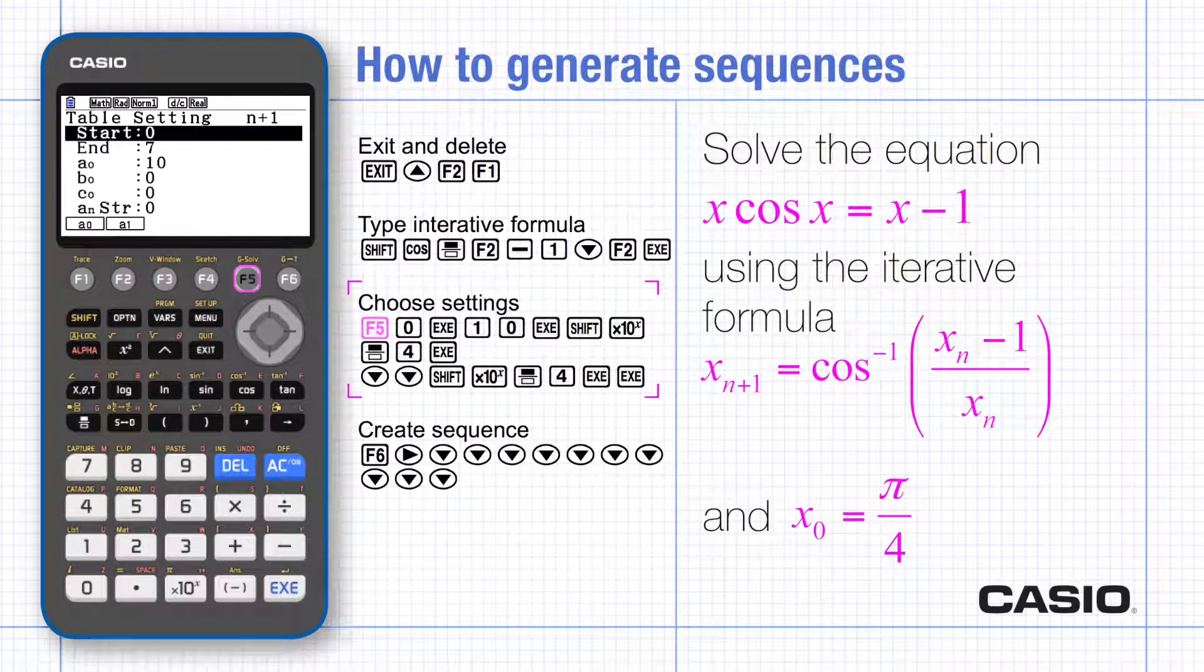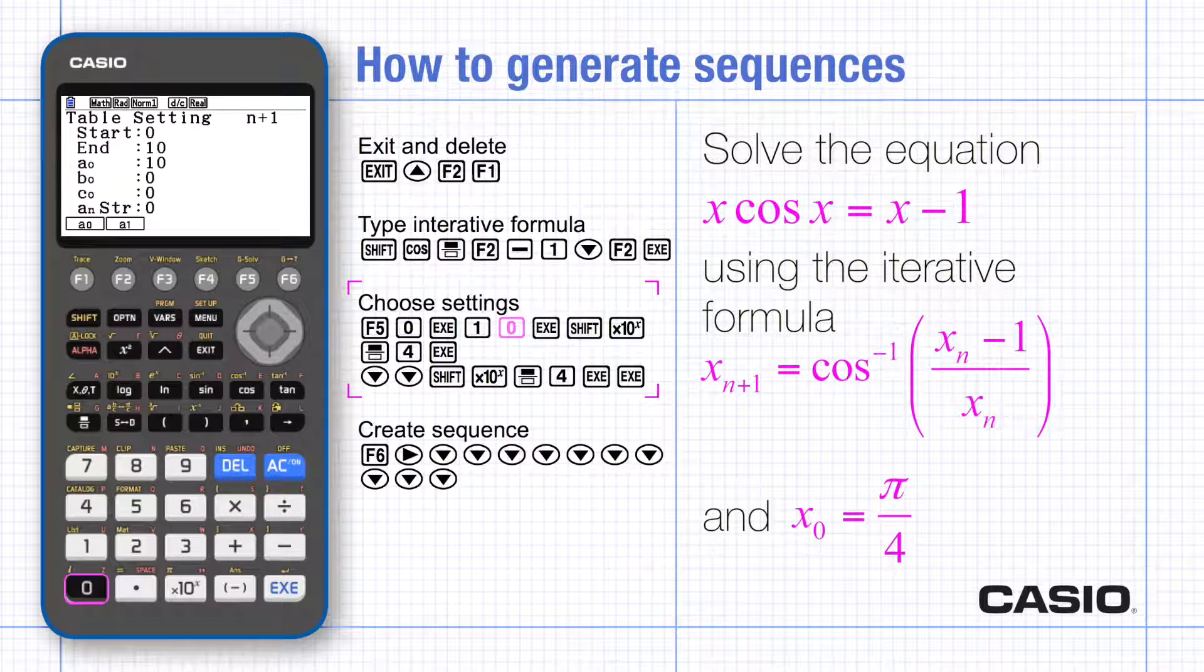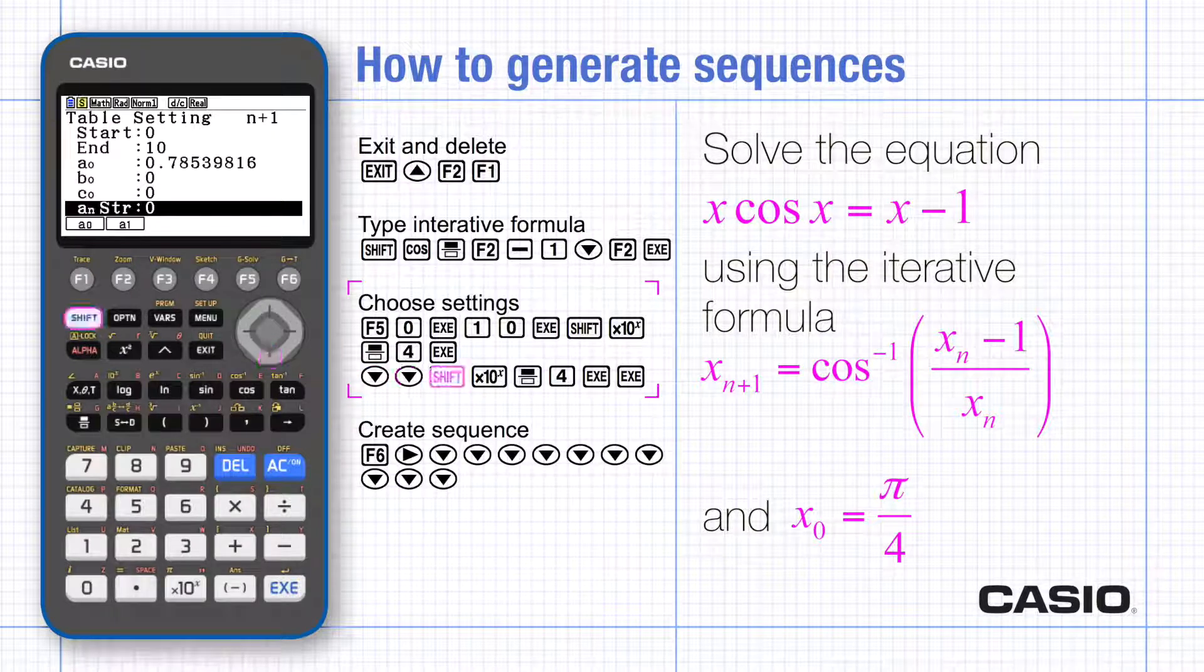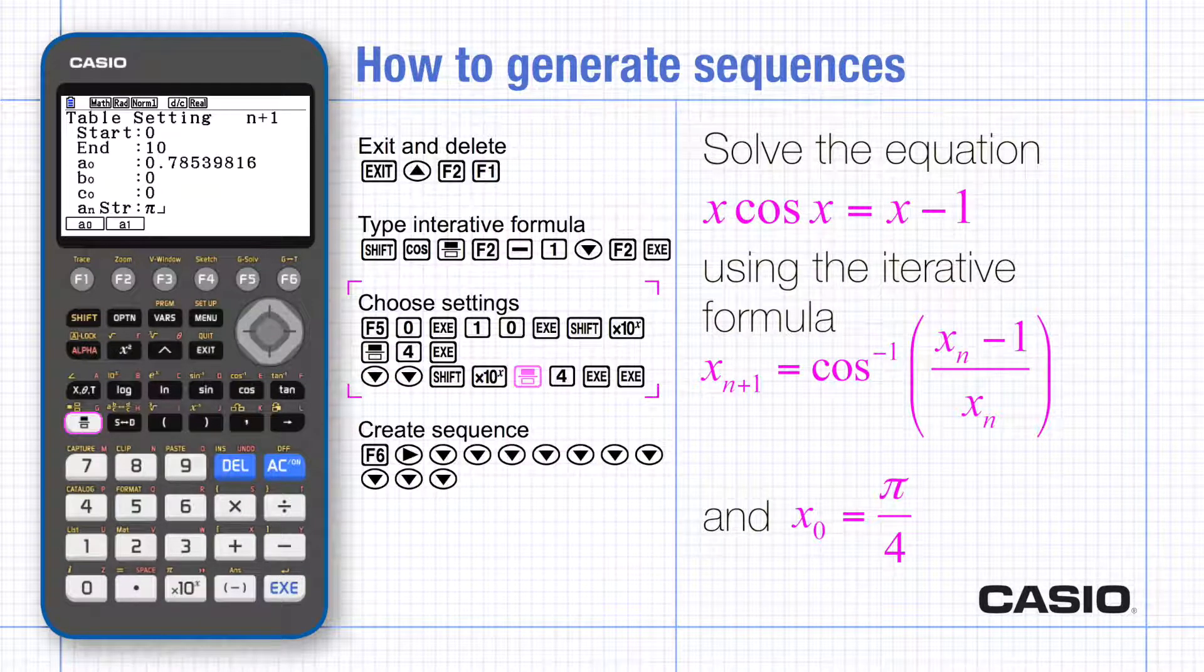Choose settings 0 and 10 for the number of terms, and pi over 4 for a naught. If you want to see the cobweb diagram as well, enter pi over 4 for An str as the starting point of the diagram.